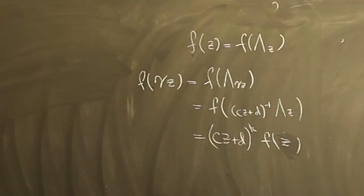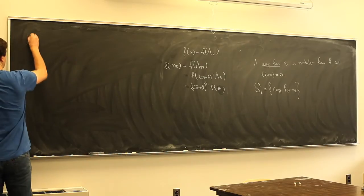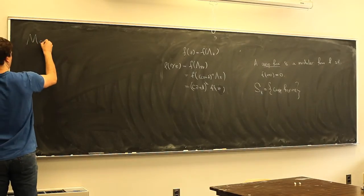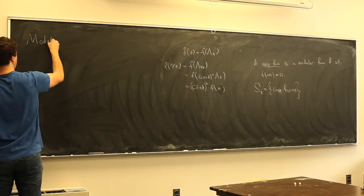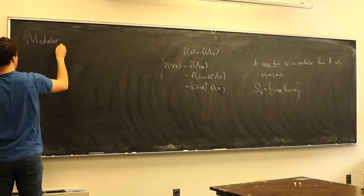These things are functions on the moduli space of elliptic curves, so it'd be good to interpret what they mean in terms of elliptic curves. The first thing I want to talk about is the modular interpretation of modular forms.